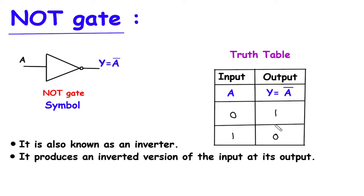This is the truth table for NOT gate. Input is A and output is Y is equal to A bar. Here we can see when the input is 0, the output is 1. And when input is 1, the output is 0 — that is, input 0 is low and output is high; input 1 is high and output is low.